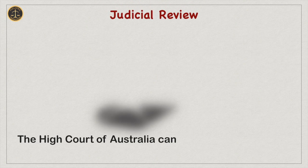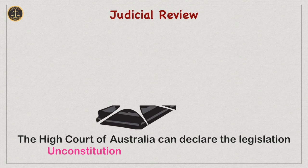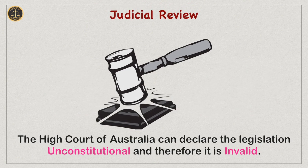Last but not the least, Judicial Review. The High Court of Australia can declare legislation unconstitutional and therefore invalid. Likewise, the High Court of Australia has supreme power in the context of judicial review. That is all about the distinct features of the Australian Constitution.